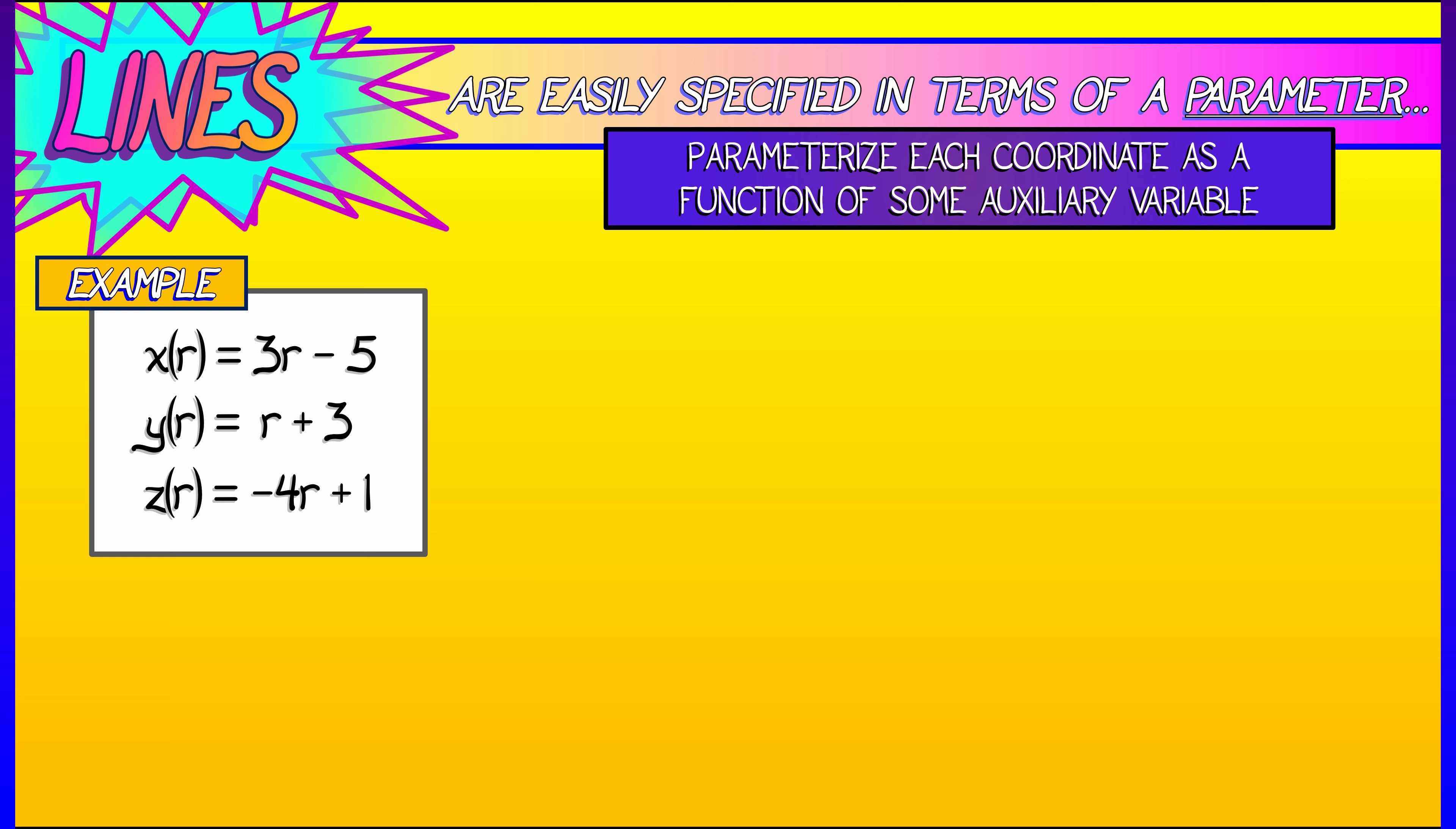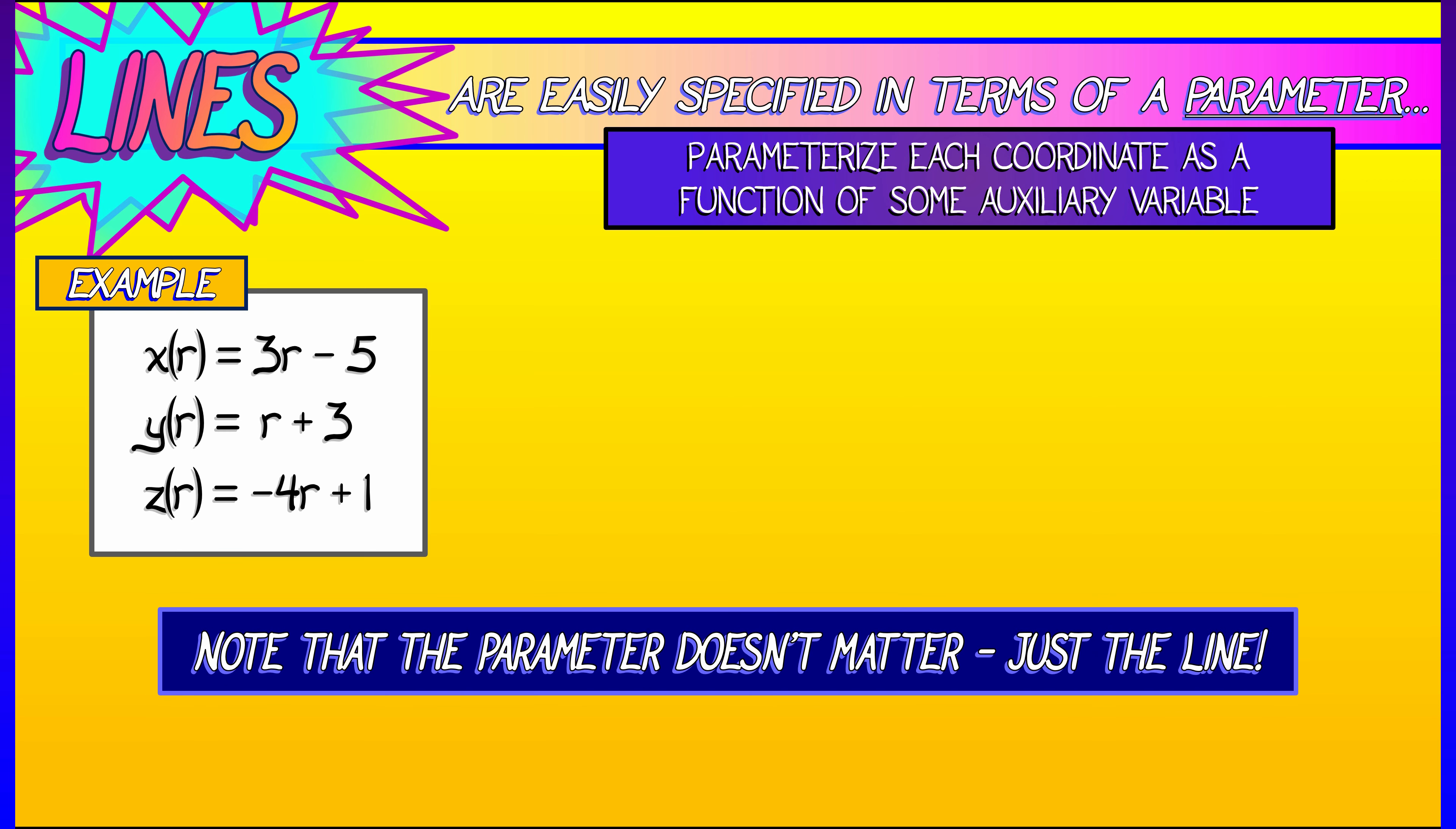So r is something like time. Now, notice that the specifics of the parameter don't really matter. I could use a different variable. I could use s. I could say x of s is 3s minus 8, y of s is s plus 2, z of s equals negative 4s plus 5. This also gives me a line in three-dimensional space because each of these is some first-order function of the parameter.